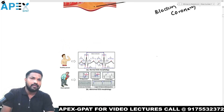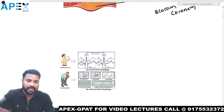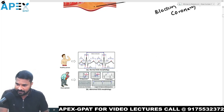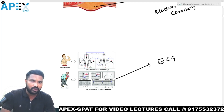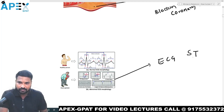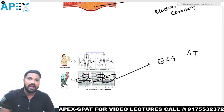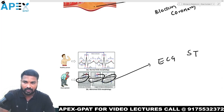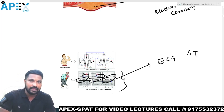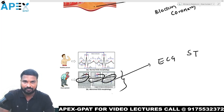Whenever a patient is having a heart attack, if you observe the ECG — the electrocardiogram — you can see abnormalities such as ST elevation, ST depression, T point rise, and other related problems. When you see these abnormalities in the ECG, that means that particular patient is a heart patient.